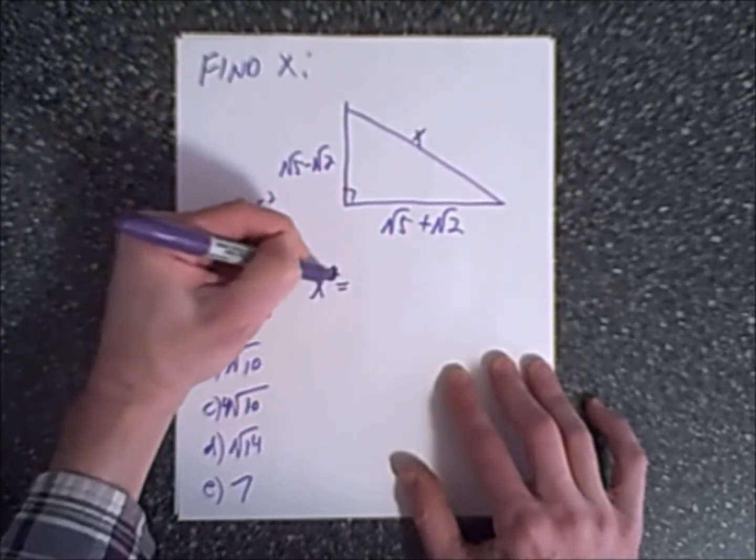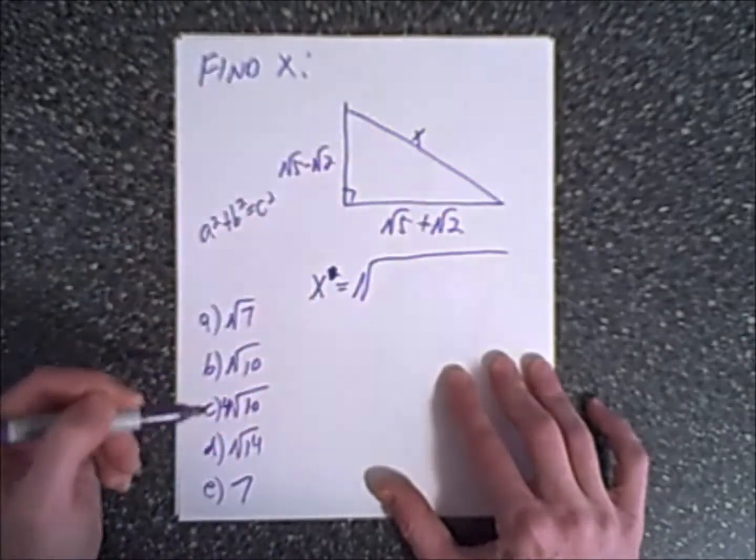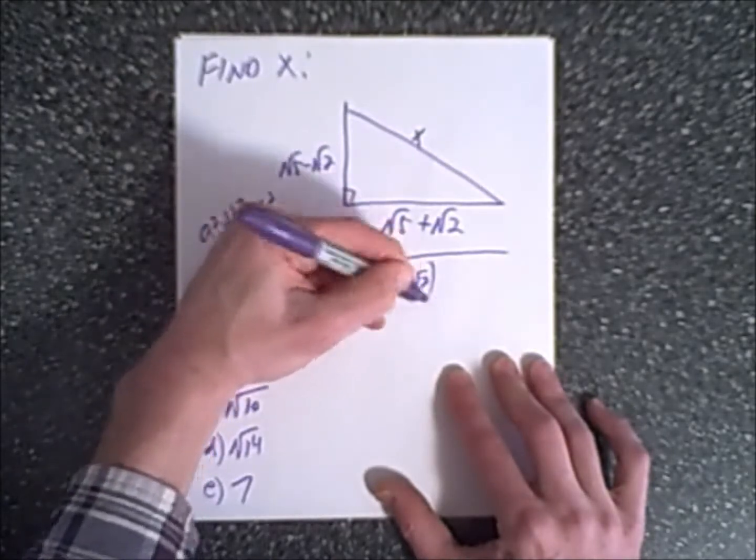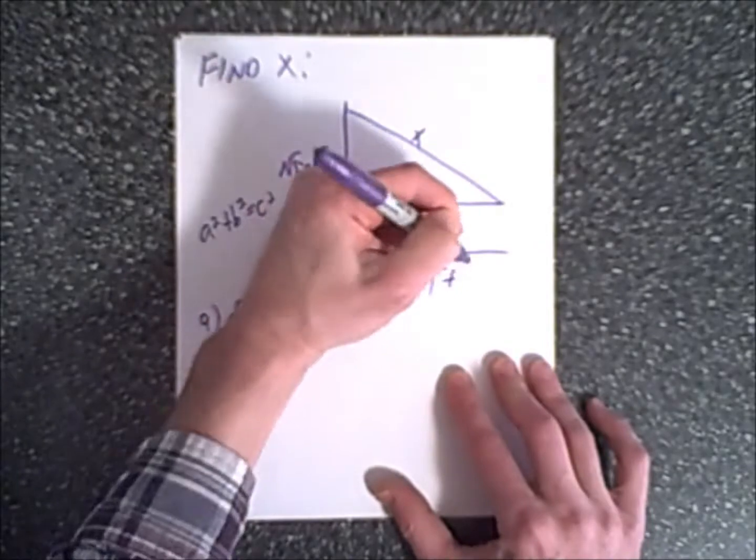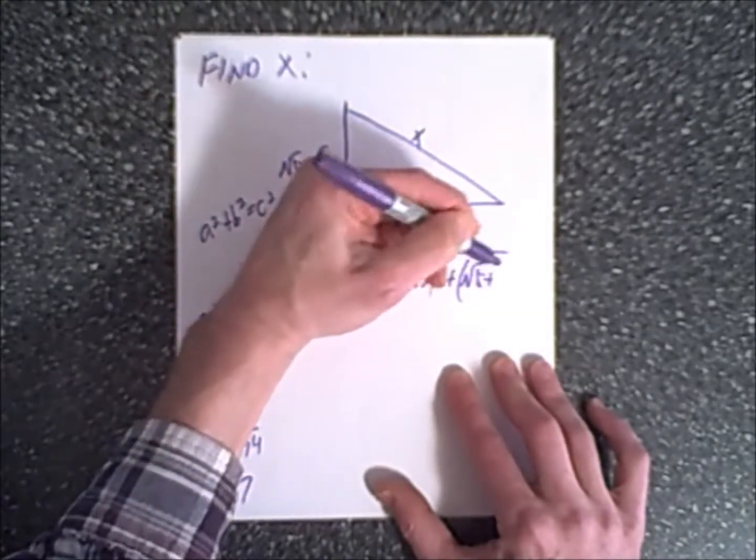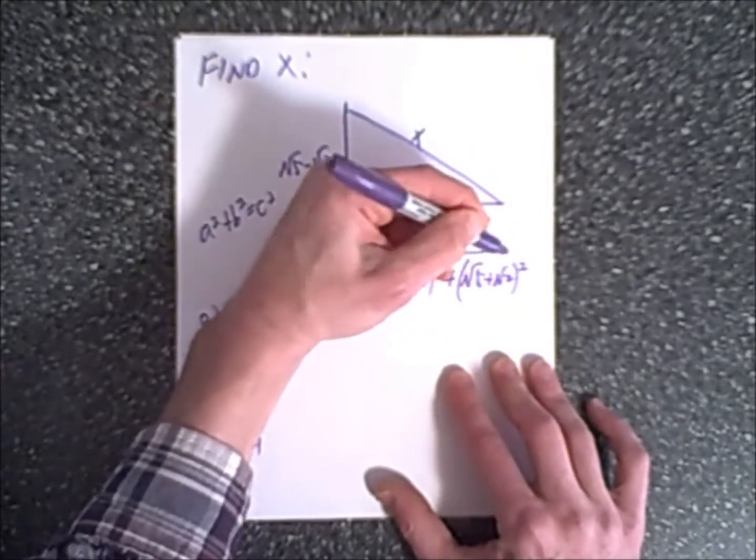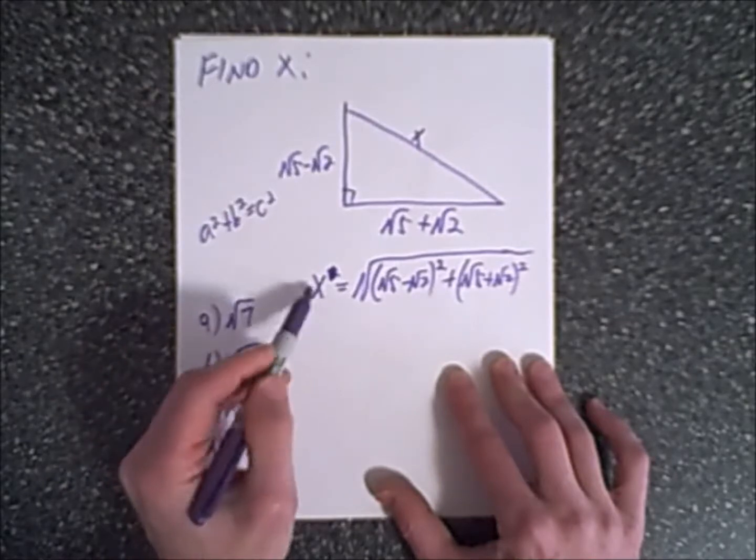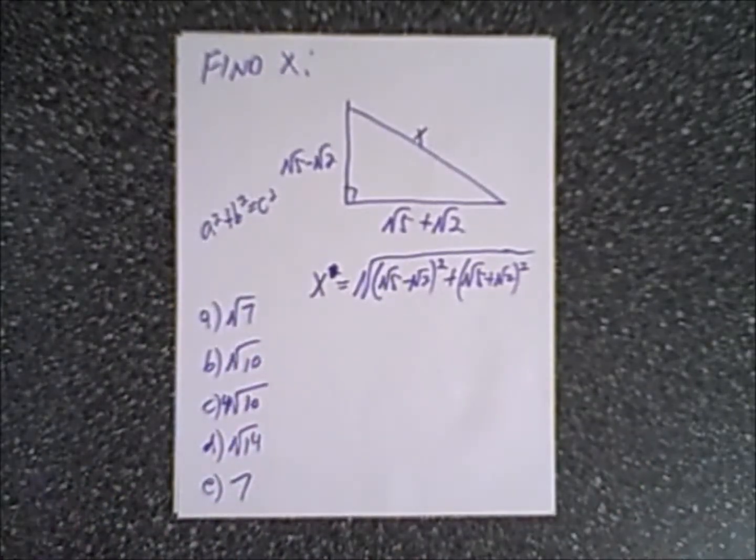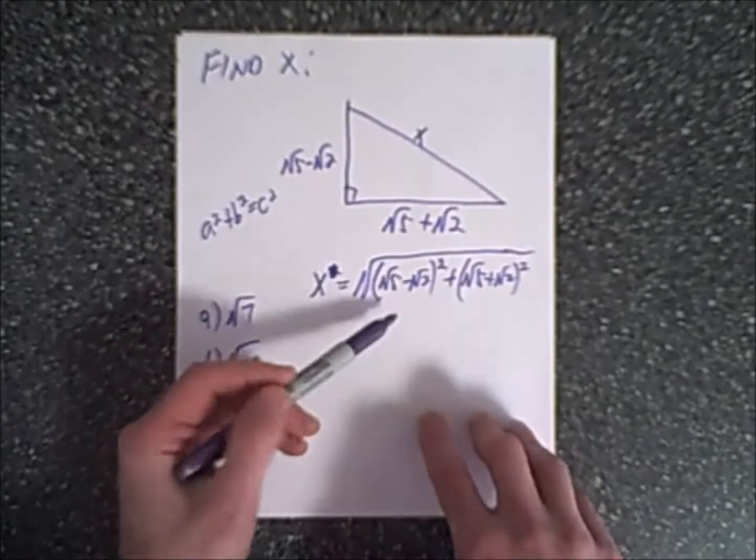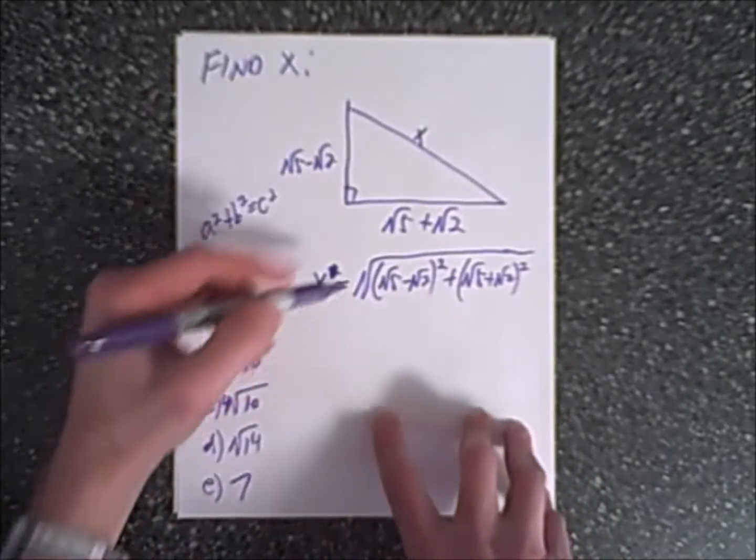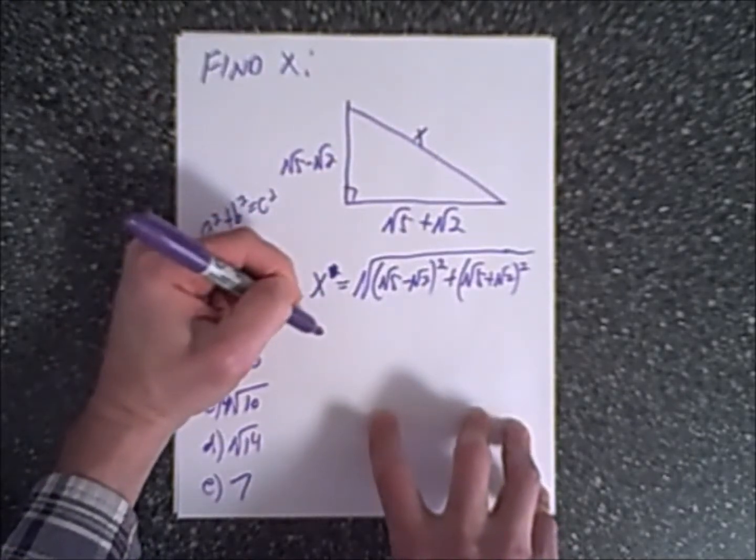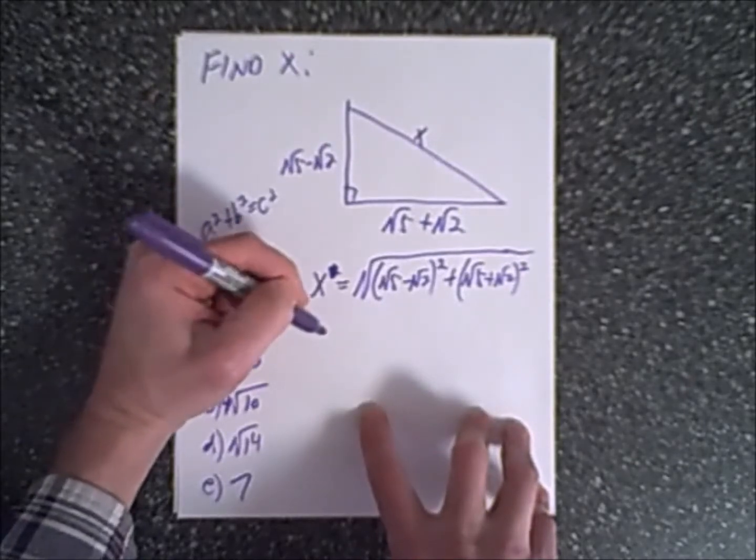X is going to equal the square root of this side squared, which is the square root of five minus the square root of two squared, plus the square root of five plus the square root of two squared. So this is one leg squared, the other leg squared equals x squared, we square root both sides, and this is what we're left with, which comes to our next challenge. We need to take these and simplify them. We're going to have to work with radicals as well as using foil and other methods of factoring or combining terms.